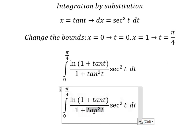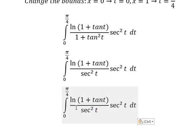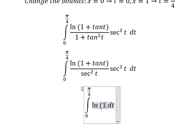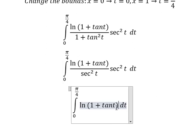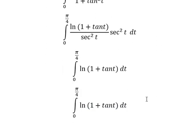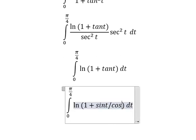We know that 1 plus tan²(t) can be changed by sec²(t), and now we simplify. We have ln of (1 plus tan(t)), and since tan(t) equals sin(t) over cos(t), we proceed.